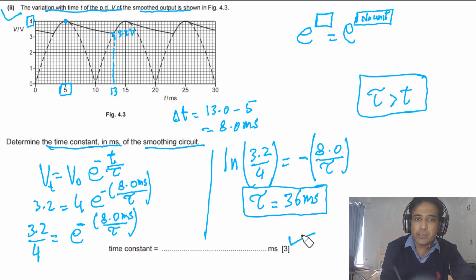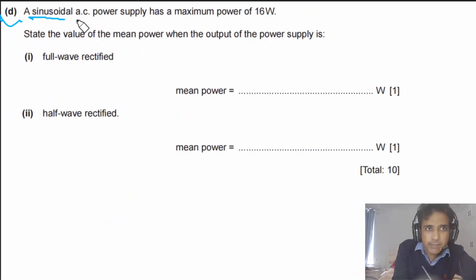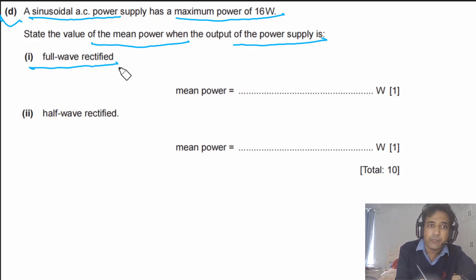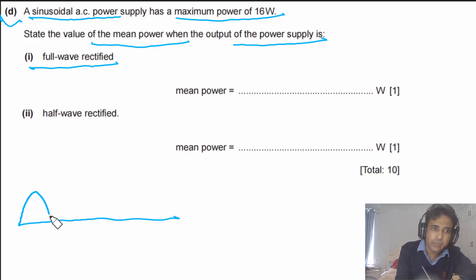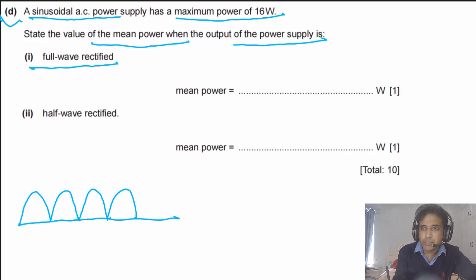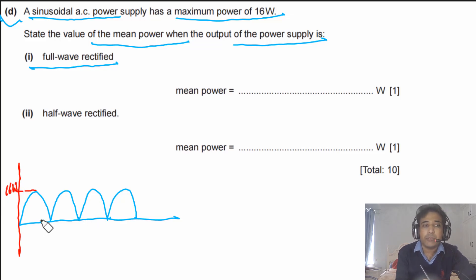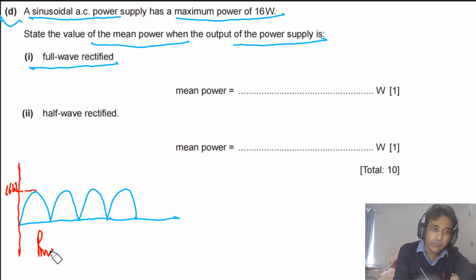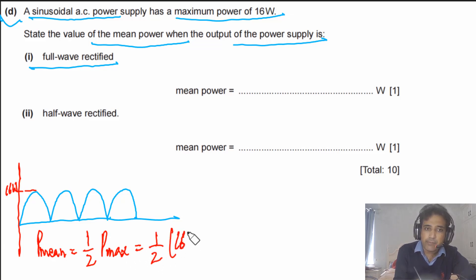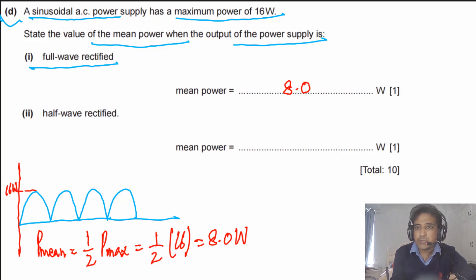Part D: a sinusoidal AC power supply has a maximum power of 16 watts. State the mean power when the output is full-wave rectified. For a full-wave rectified signal or an AC power supply, the mean power equals half the maximum power: P_mean = ½ × P_max = ½ × 16 = 8.0 watts.